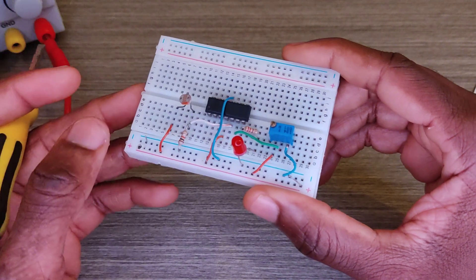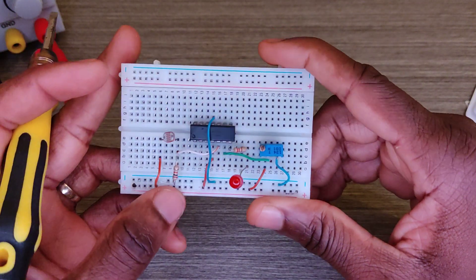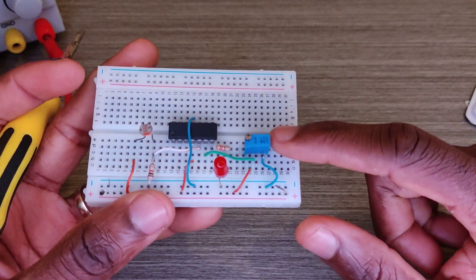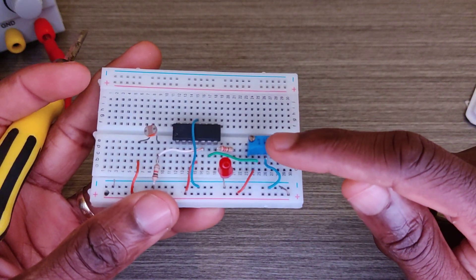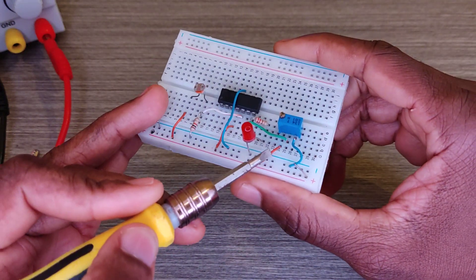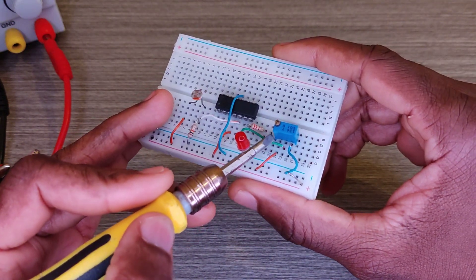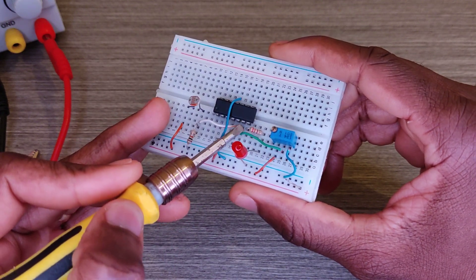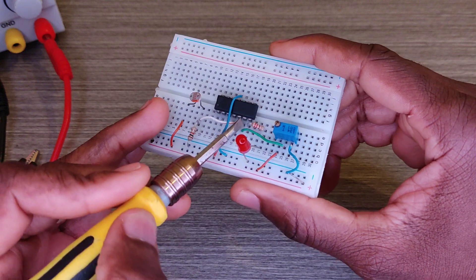Now I've also got voltage coming from this 10 kilohm trimmer. The middle pin is giving voltage to pin six here.